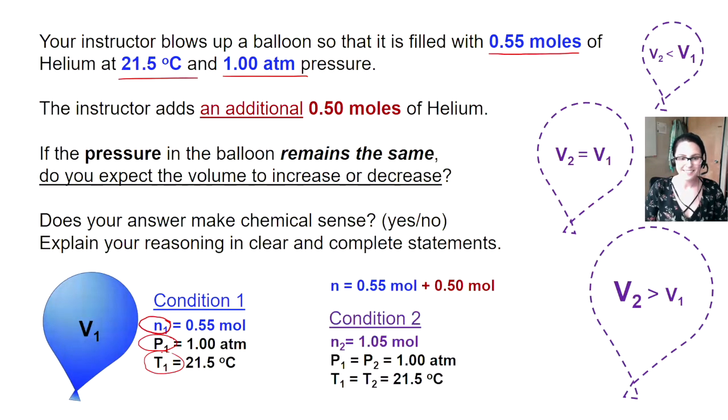Did you get it? Our N amount of moles is going to be changing because we've added more to the balloon. Our pressure remains the same as stated in the question and the temperature is also assumed to stay the same. There's two strategies that can help us come to the answer to this problem. Let's work through the qualitative approach first.